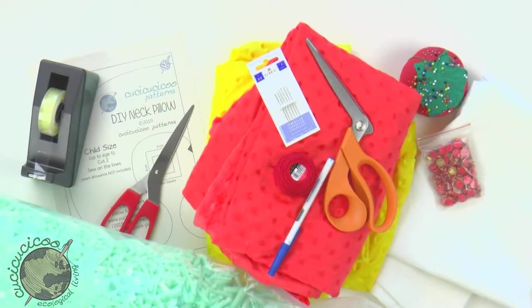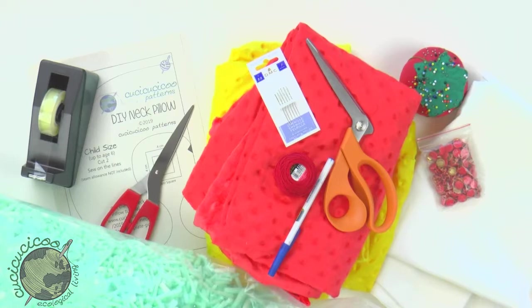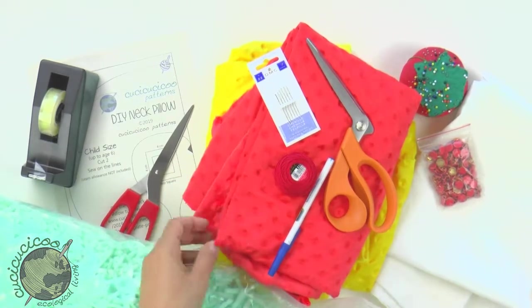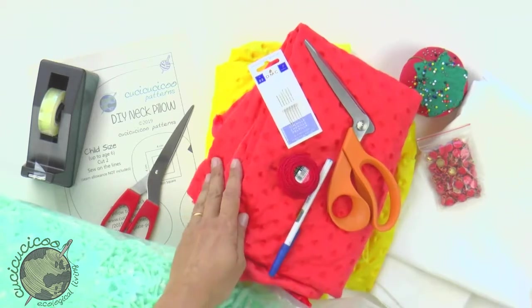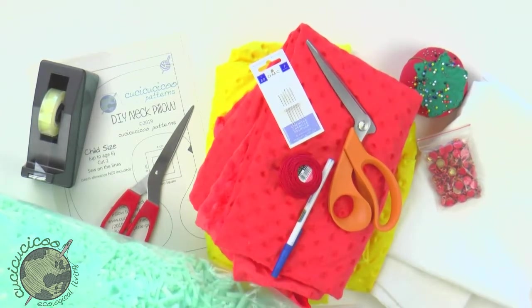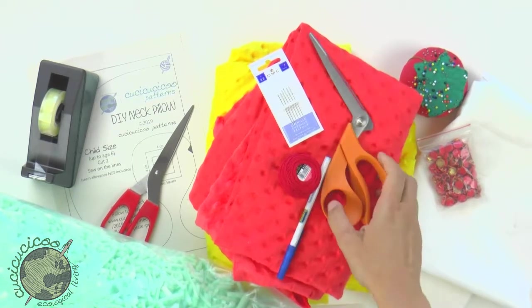First, download the free pattern from CouchCouchCoo.com. You'll need tape and scissors to assemble the pattern. As for fabric, I'm using a minky with these raised dots. I'm using both red and yellow. To cut the fabric, some fabric shears. I use Fiskars razor edge scissors.